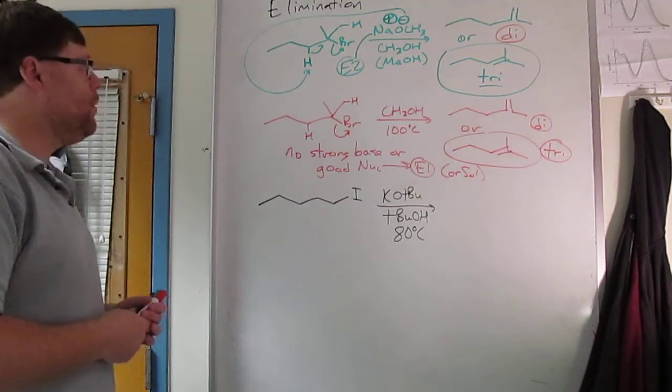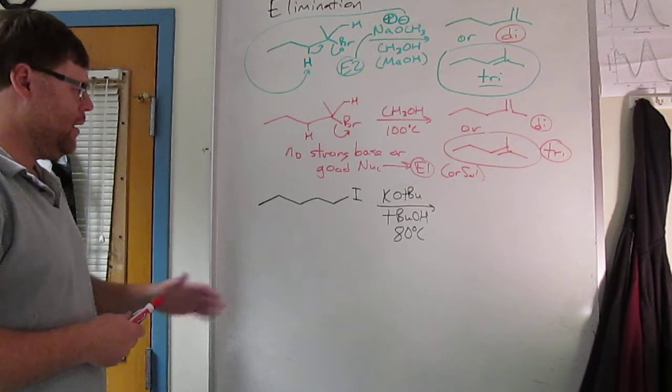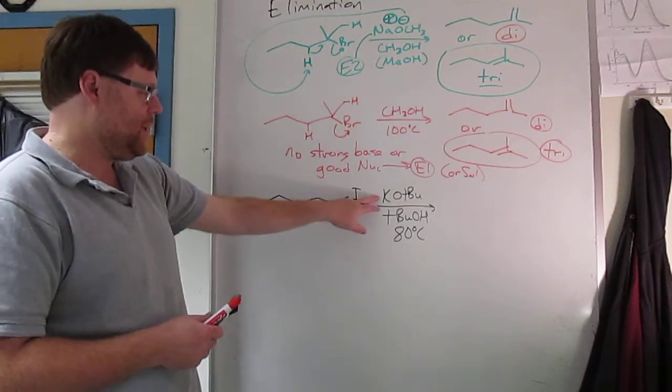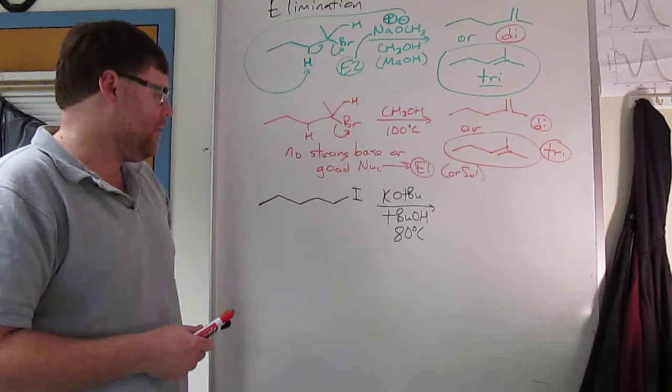All right, now for video elimination homework number three. We have a primary alkyl iodide, potassium t-butoxide, and t-butanol at 80 degrees.